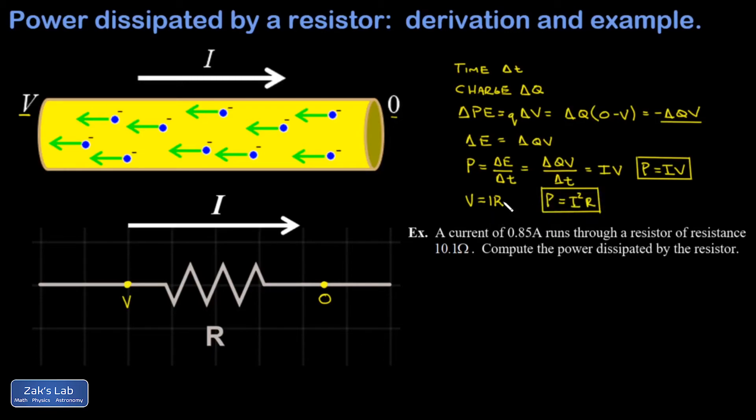Finally, I can solve Ohm's law for I and write that I is V over R. If I replace this I with V over R, I get that the power dissipated by the resistor is V squared over R. Again, that top formula P equals IV applies to anything in which a current and potential difference is involved. The bottom two formulas apply only to resistors.